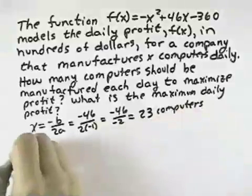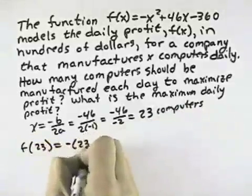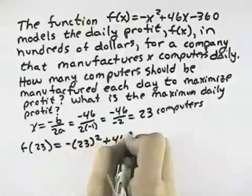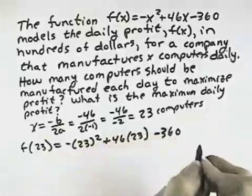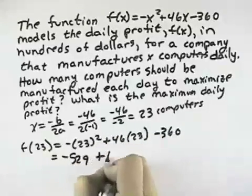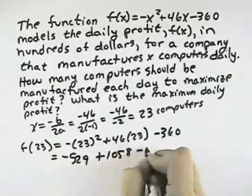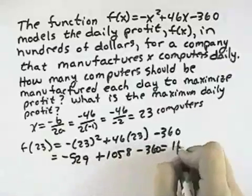And we want to see the maximum profit. Well, that would be f of 23 computers, which is negative of 23 squared plus 46 times 23 minus 360, and that will come out to be negative 529 plus 1,058 minus 360, or that comes out to be 169.